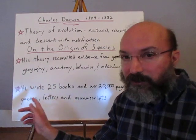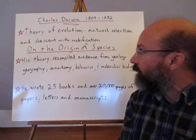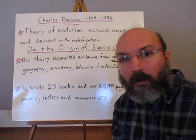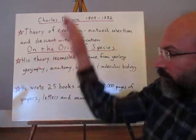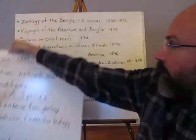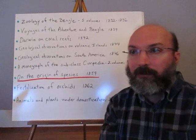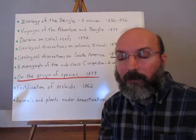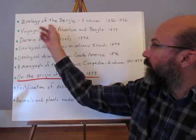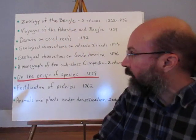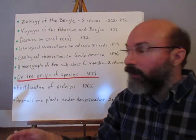Darwin explained this so well. He wrote 25 books and over 20,000 pages of papers, letters, and manuscripts, producing an overwhelming amount of information for people to examine and test. From the voyage of the Beagle, he had so many zoological and botanical specimens that he published many anatomical examples, along with geological and geographic observations, in the Voyage of the Beagle. He also wrote a version to popularize the voyage for the general public.